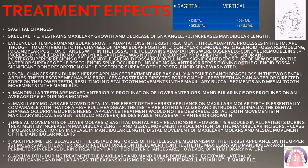In glenoid fossa remodeling, there is significant deposition of new bone on the anterior surface of the post-glenoid spine, indicating an anterior repositioning of the glenoid fossa. Because of this new bone deposition, the glenoid fossa is repositioned anteriorly, and because of that the mandible is also repositioned anteriorly — which is the main goal of the Herbst appliance.